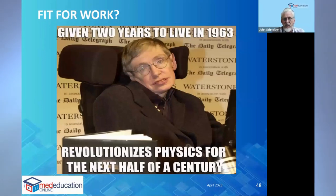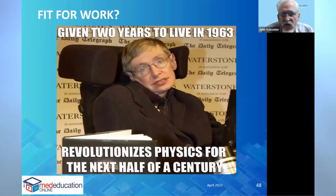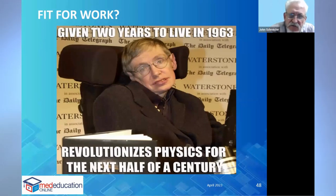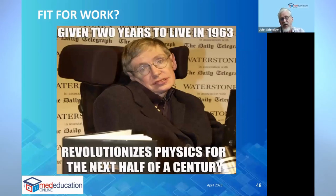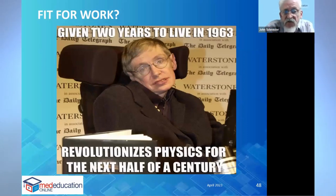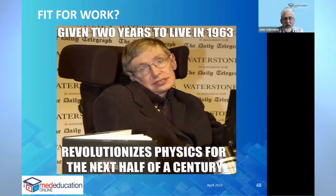Another example: someone given two years to live in 1963, with significant mobility and communication difficulties, went on to revolutionise physics for the next 50 or more years. This is a good illustration of the difference between impairment and disability. If we're going to give people large sums of money, we should focus that on those with significant disability, not merely impairment, and use funds to support proper rehabilitation and return-to-work programs rather than lump sum payments.